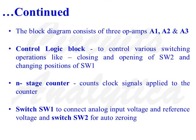The diagram consists of three operational amplifiers A1, A2 and A3. A control logic block controls various switching operations like closing and opening of switch SW2 and changing positions of switch SW1. An end stage counter counts clock signals applied by the control logic. Switch SW1 connects analog input voltage and reference voltage to the input of the buffer amplifier, and switch SW2 is used for auto zeroing.